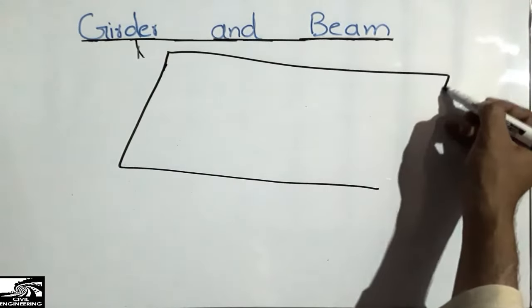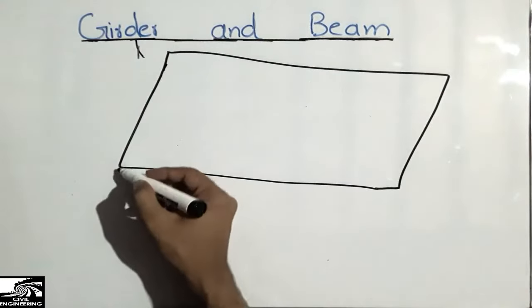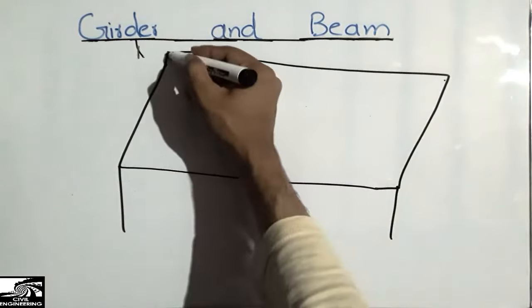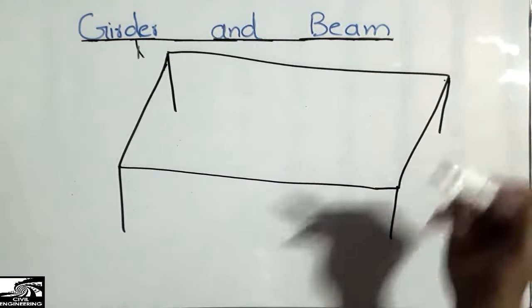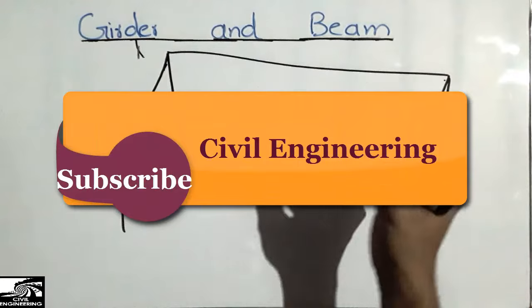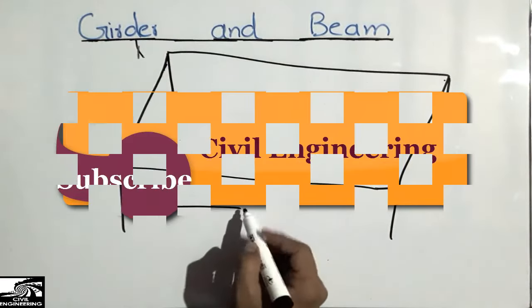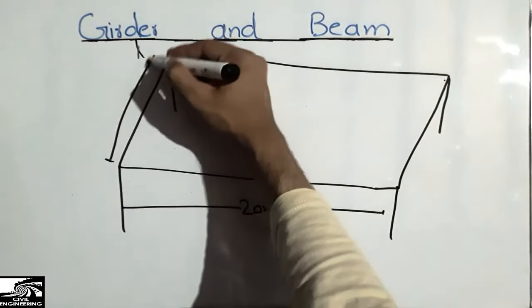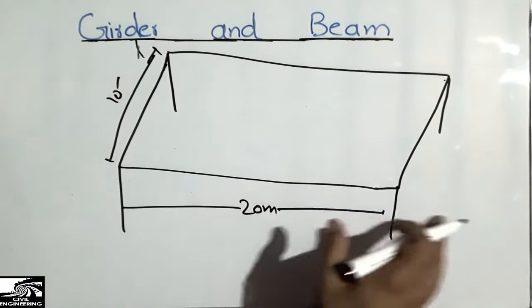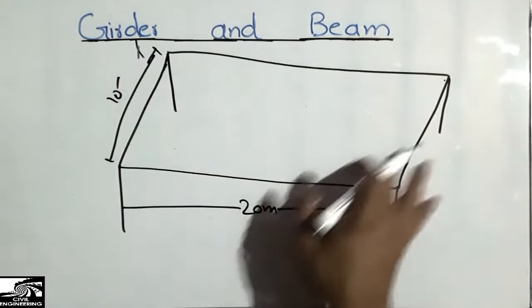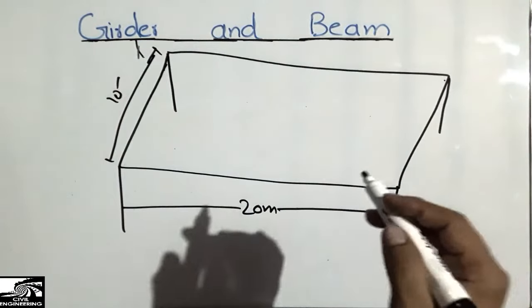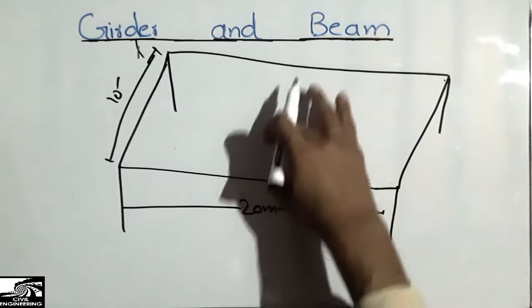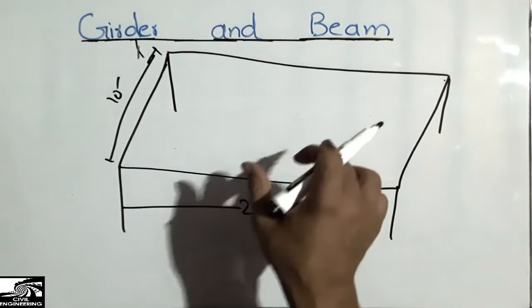Similar to what I show in the 3D animation, here we have walls, or maybe columns on the sides. Suppose this is a structure with a huge length of 20 meters, which is really large, and a width of maybe 10 meters. This represents a large-span residential hall or any similar hall.